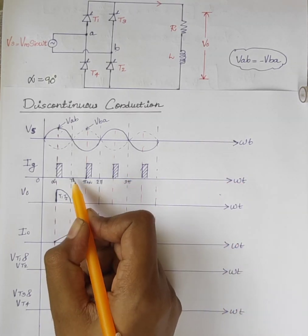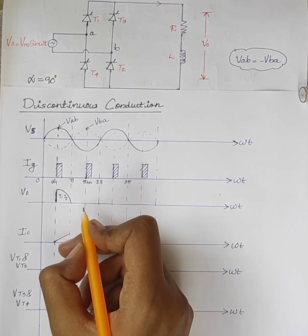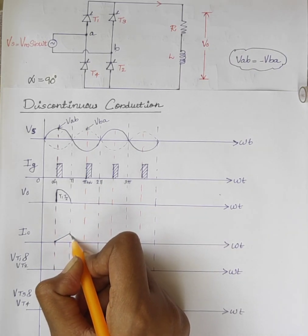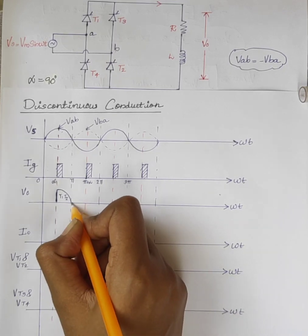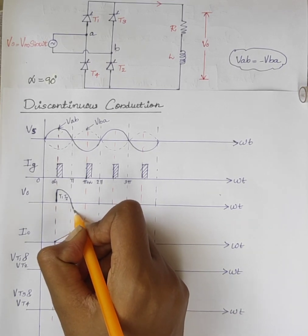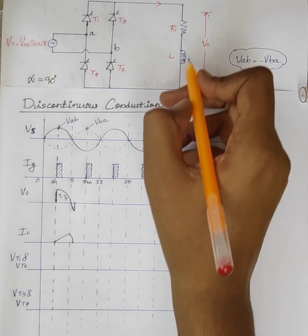At omega t equals pi, due to the presence of inductor, the current slowly reaches the zero value. Therefore, a small negative voltage appears across the load.